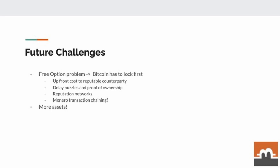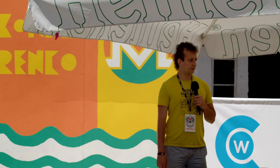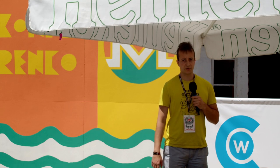In the future, we want to tackle the free option problem. This is a problem that arises because in our protocol, Bitcoin always has to lock first, meaning that somebody who wants to make a swap has to lock the Bitcoin first and therefore spend a minimum of one transaction fee without knowing that the counterparty will collaborate on the swap. We seek to solve this problem by either requiring an upfront cost to a reputable counterparty by means of delay puzzles and proof of ownership, or by putting an extra reputation network on top of Farcaster.